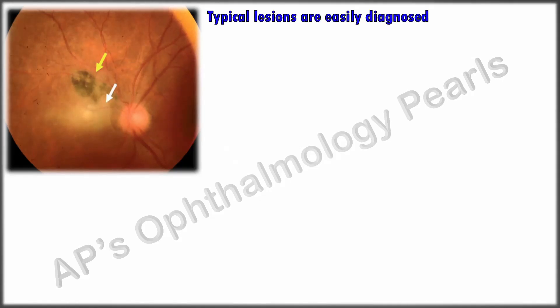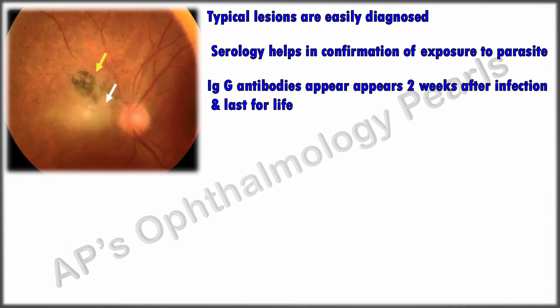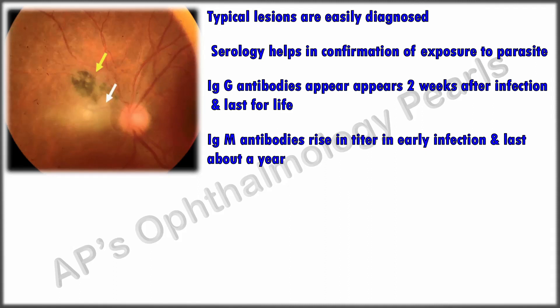Typical lesions are easily diagnosed clinically, while serology helps confirm exposure to the parasite. IgG antibodies appear two weeks after infection and last for life in varying titers; therefore, IgG positivity in the absence of local or systemic evidence of infection has no clinical relevance. A rise in IgG titers over a three-week period may indicate recent infection, and IgG antibodies cross the placenta.